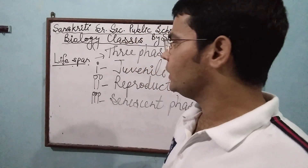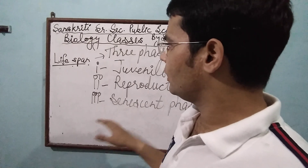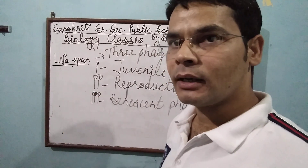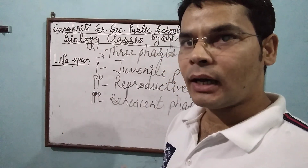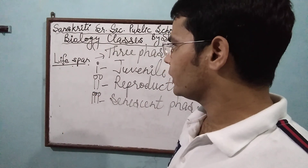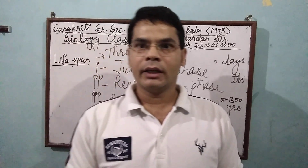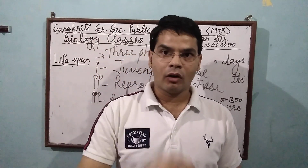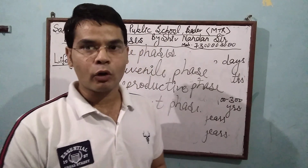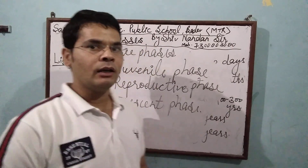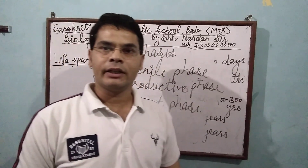This is our complete topic of Life Span. Key points: first, life span size does not determine life span, and the senescent phase leads to death. Second, single-celled organisms like Amoeba and Paramecium are biologically immortal — they have no natural death.